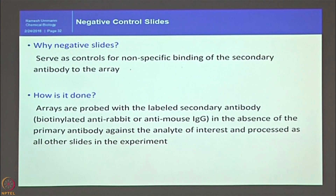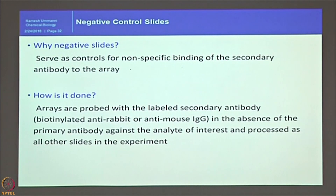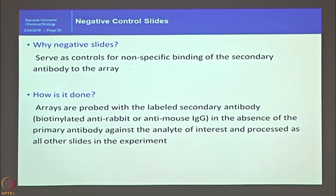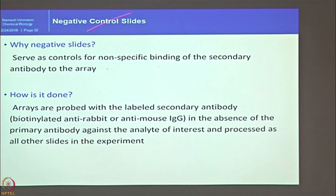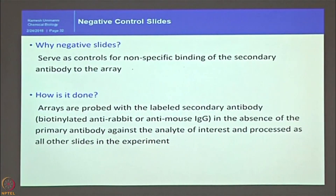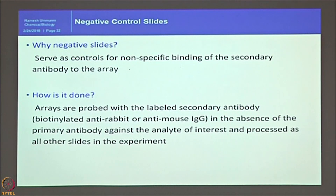It is also important to include negative slides. These negative slides serve to detect non-specific binding of the secondary antibody to the arrays. One out of every 50 slides will be probed with only secondary antibody, and those signals will be subtracted from the original signal. If you see any signal for the secondary antibody alone, those antibodies need to be dropped, as some secondary antibodies labeled for infrared from different companies behave completely differently.